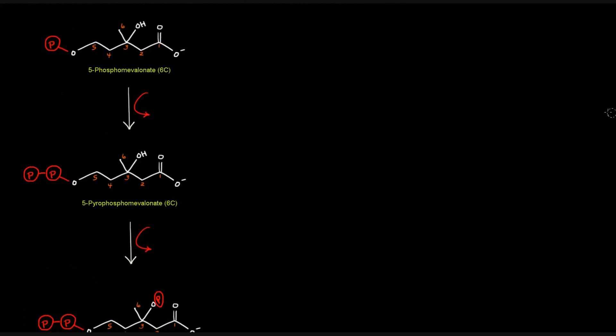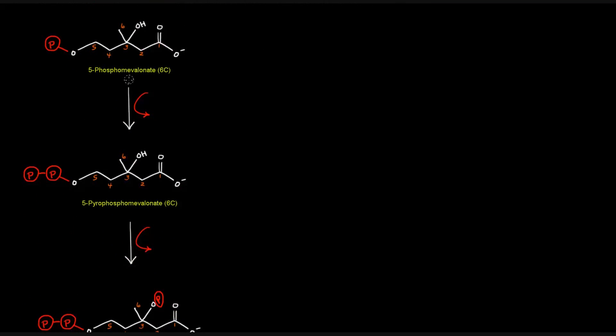Once we have that, we're going to take 5-phosphomevalonate and turn it into 5-pyrophosphomevalonate, which basically just has another phosphate group attached there at that 5-carbon. So again, we're going to have an investment of ATP. ATP comes in, ADP comes off, and another kinase will be catalyzing this. So in this case though, it's phosphomevalonate kinase because it's acting on a phosphomevalonate.